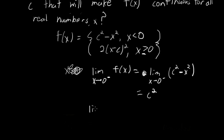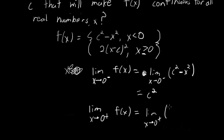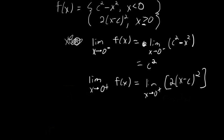Now, the limit as x approaches 0 from the right of f of x is dictated by the other function. That's the limit as x approaches 0 from the right of 2 times the quantity x minus c, squared. If we plug in 0, that's just going to be 2 times 0 minus c squared, which is 2c squared. If it's not clear why we can just plug in 0, that's because this is a polynomial function, so it's going to be continuous at x equals 0.